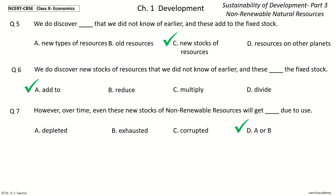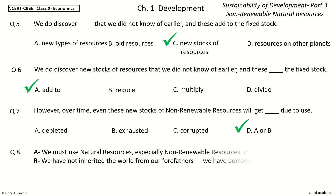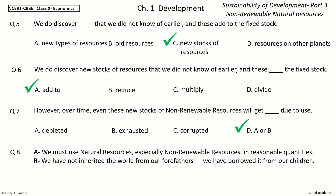Question eight — assertion and reason: Assertion: We must use natural resources, especially non-renewable resources, in reasonable quantities. Reason: We have not inherited the world from our forefathers; we have borrowed it from our children. Options: A — assertion false, reason true; B — assertion true, reason false; C — assertion true, reason true; D — assertion false, reason false.